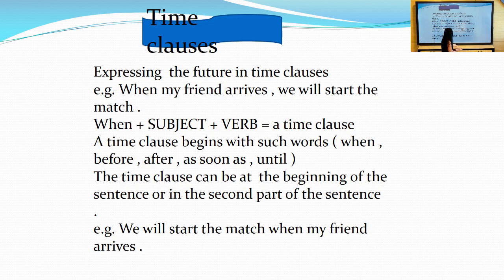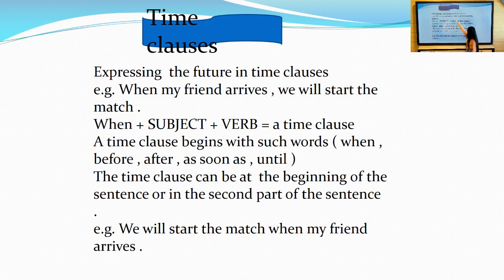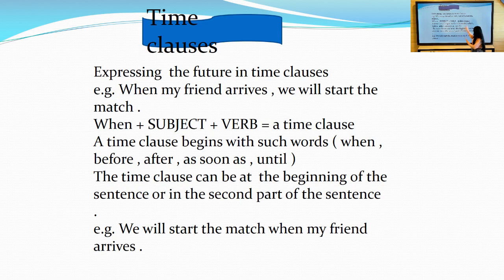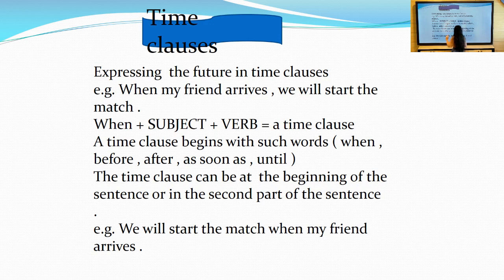Time clauses begin with such words like when, before, after, as soon as, or until. The time clause can be at the beginning of the sentence, like this sentence, or in the second part. I can swap this sentence. For example, we will start the match when my friend arrives. But in this case, when I put time clause words like when in any position, I will drop the comma. Only if these words, like when or before, are at the beginning, I will put a comma between the two sentences.